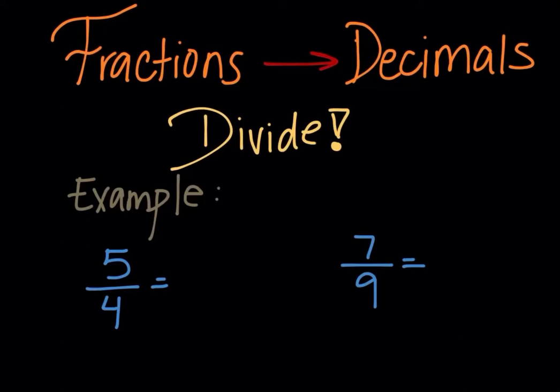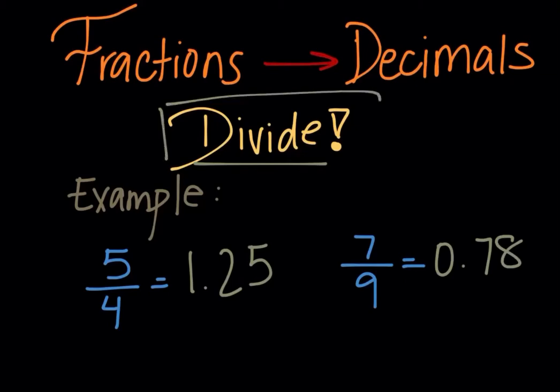It's very easy, you have to simply divide. Just divide. So an example is 5 upon 4. You just go in the calculator and divide 5 upon 4, which is 1.25, and that's in decimals. Another example: 7 upon 9. Put it in the calculator, you divide it, you will get 0.78. So it's very easy, you just have to divide.